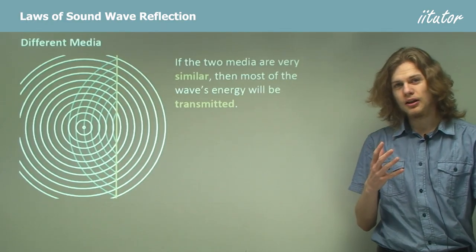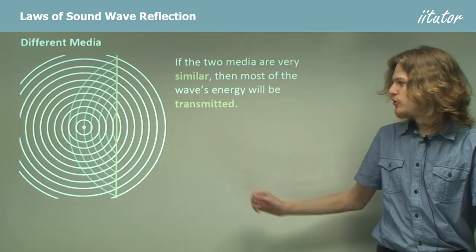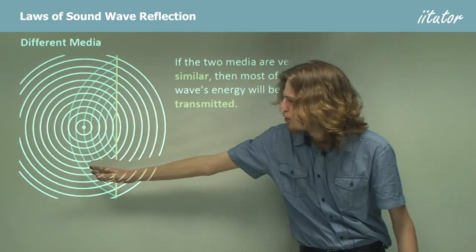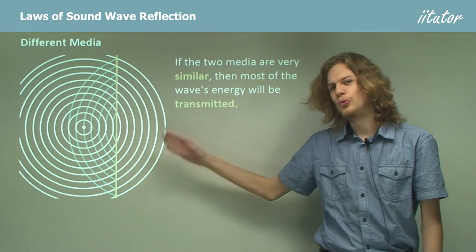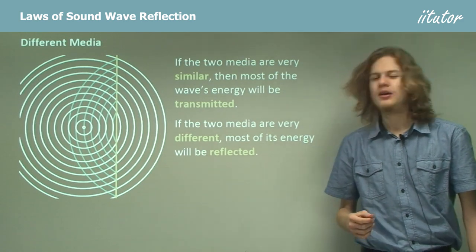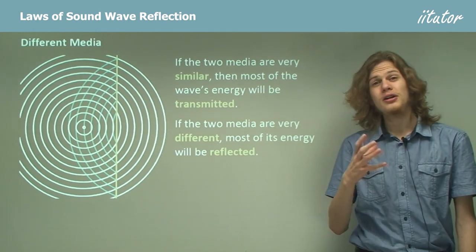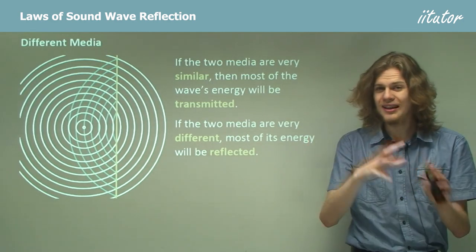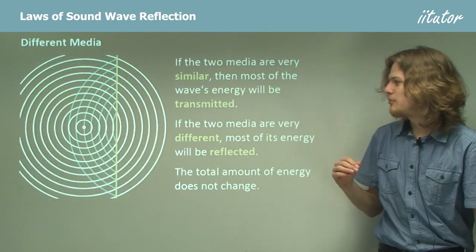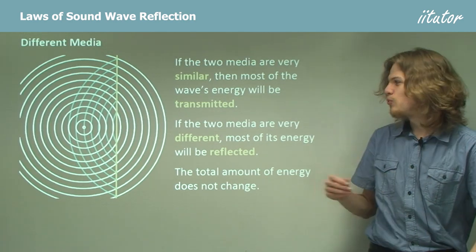If the two media are very similar, then most of the wave will just go straight through into the new medium as if nothing had happened — that's the white part of the wave to the right of the yellow line in the diagram. But if the two media are very different, like a sound wave meeting a solid wall of rock, stone, or wood, then most of the wave will be reflected from it, producing a series of blue wave fronts. The total energy in the reflected wave and the transmitted wave is exactly the same as the energy in the incident wave.